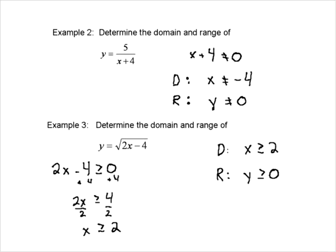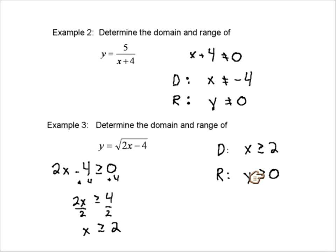Another way to look at that: our domain gives us an X value greater than or equal to 2. So if we put 2 into our original function, we're going to get the square root of 0. That is the smallest possible value in the domain, so the smallest possible value in the range would be 0.